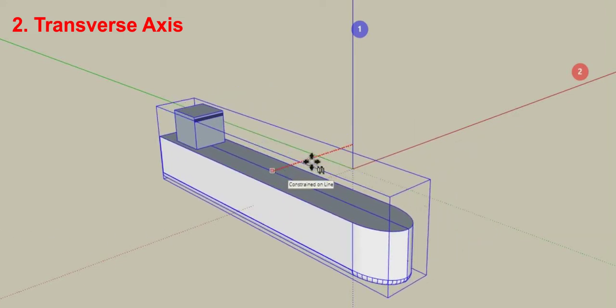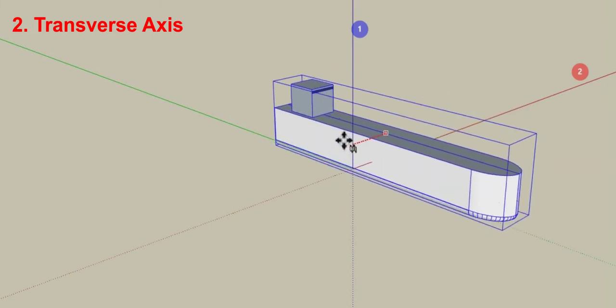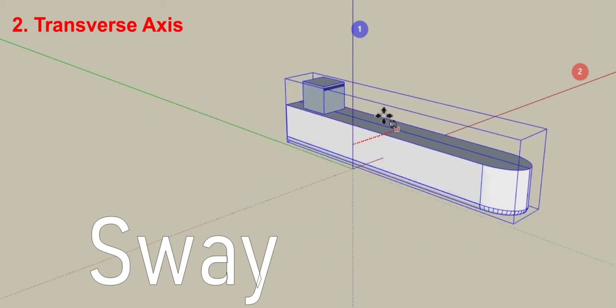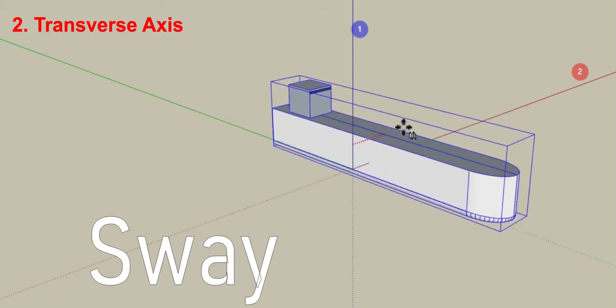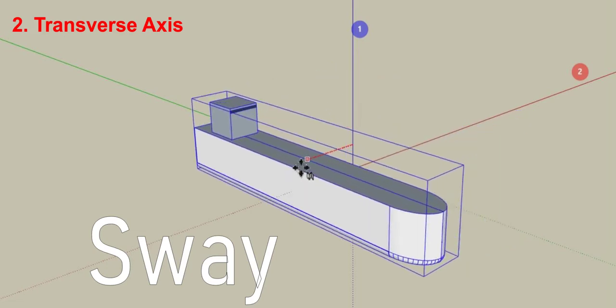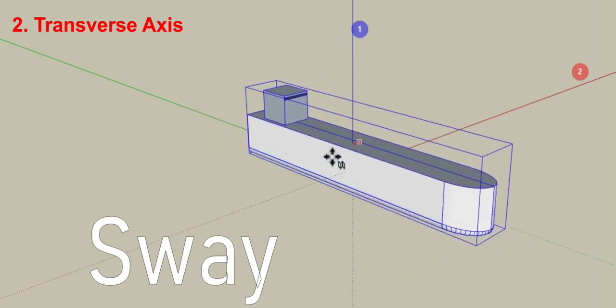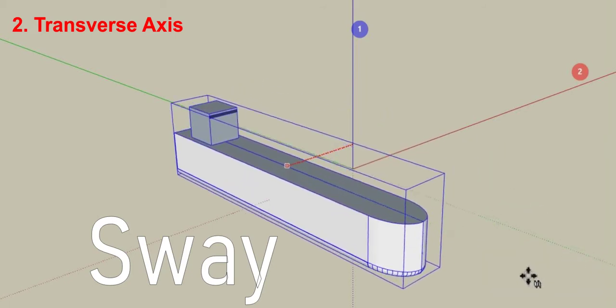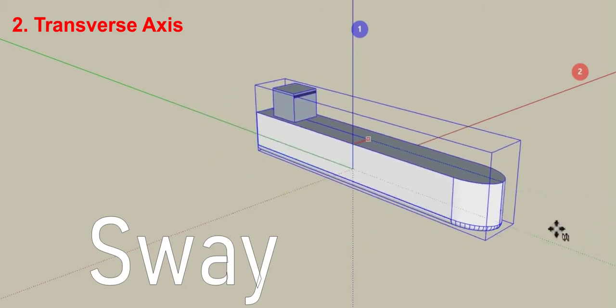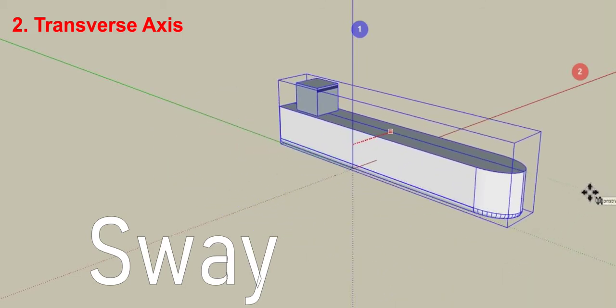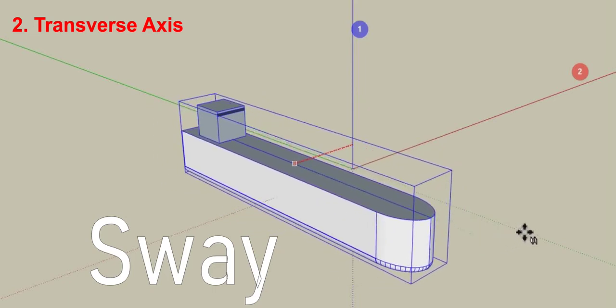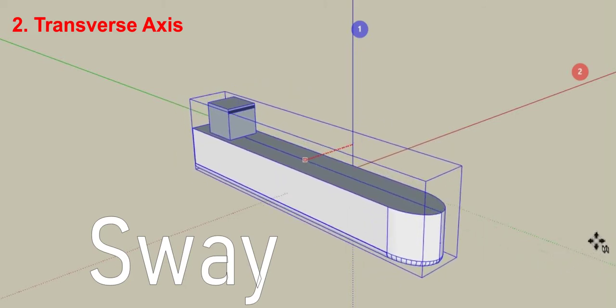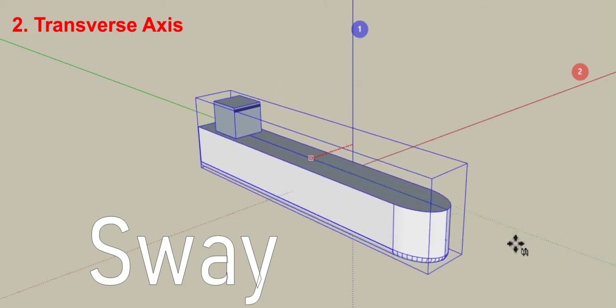What we're looking at in this movement pattern is sway. This is bodily motion along the transverse axis. Just like heaving, sway is non-rotational. Your heading isn't going to change, and your ship's going to stay oriented in the same direction. It's getting pushed off its path or track either to the port or starboard side without any torque or twisting force. This is sway, bodily motion along the transverse axis.